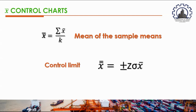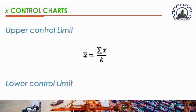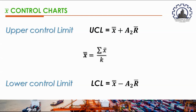If the standard deviation of the process is known, a specific formula is used to calculate the control limits. However, in this report we will be using the range. The UCL equals X-double-bar plus A₂ times R-bar, and the LCL equals X-double-bar minus A₂ times R-bar.